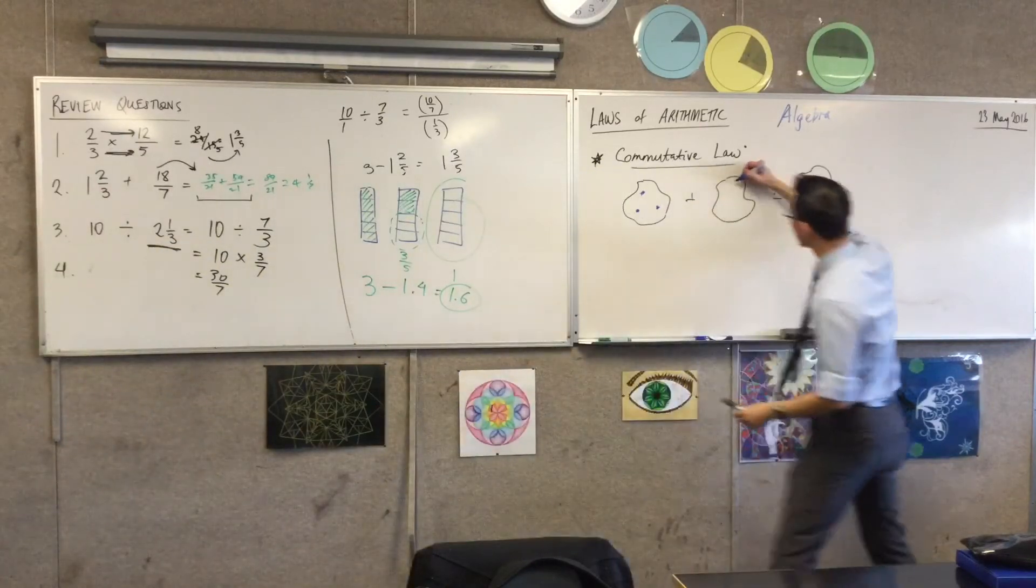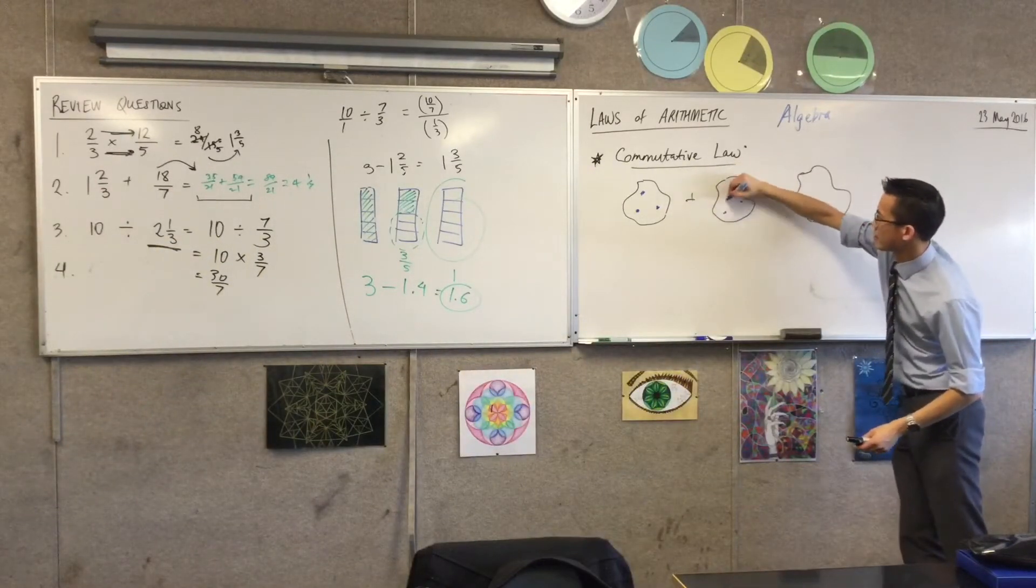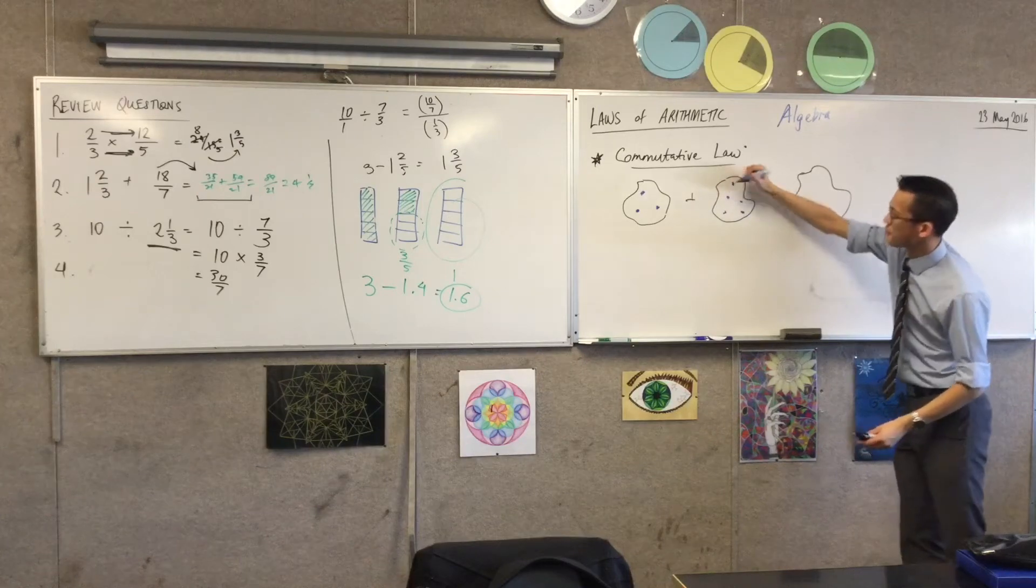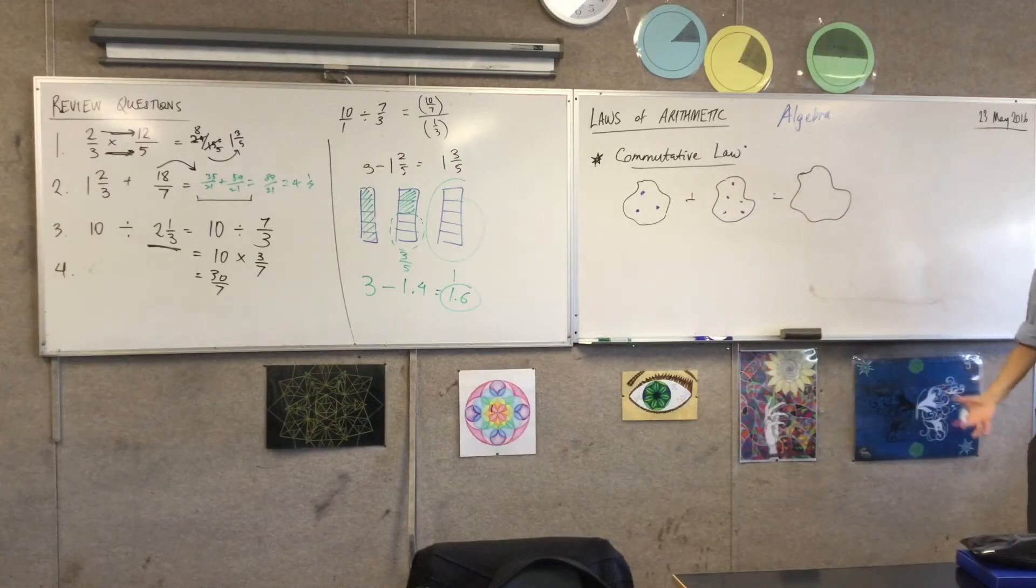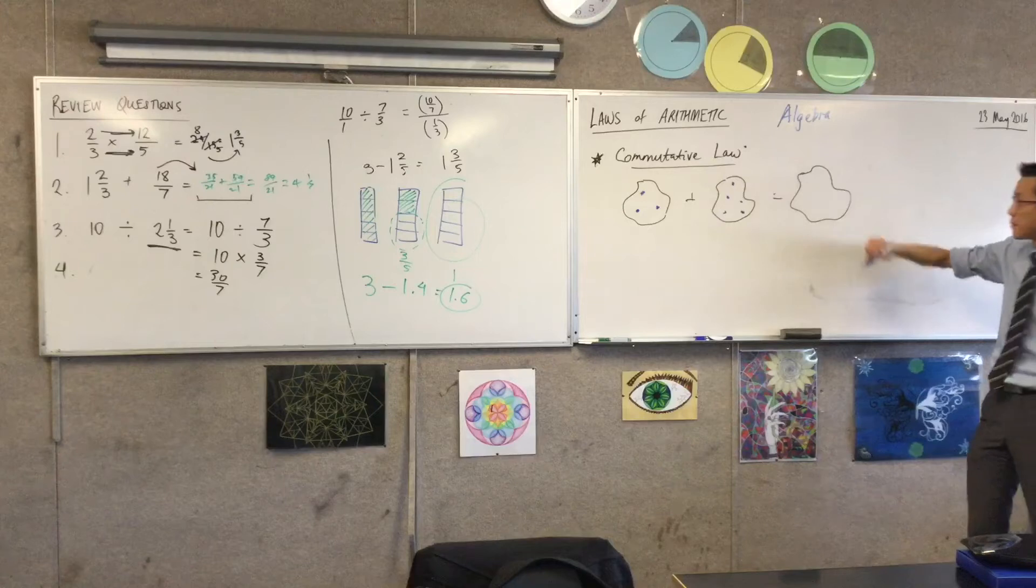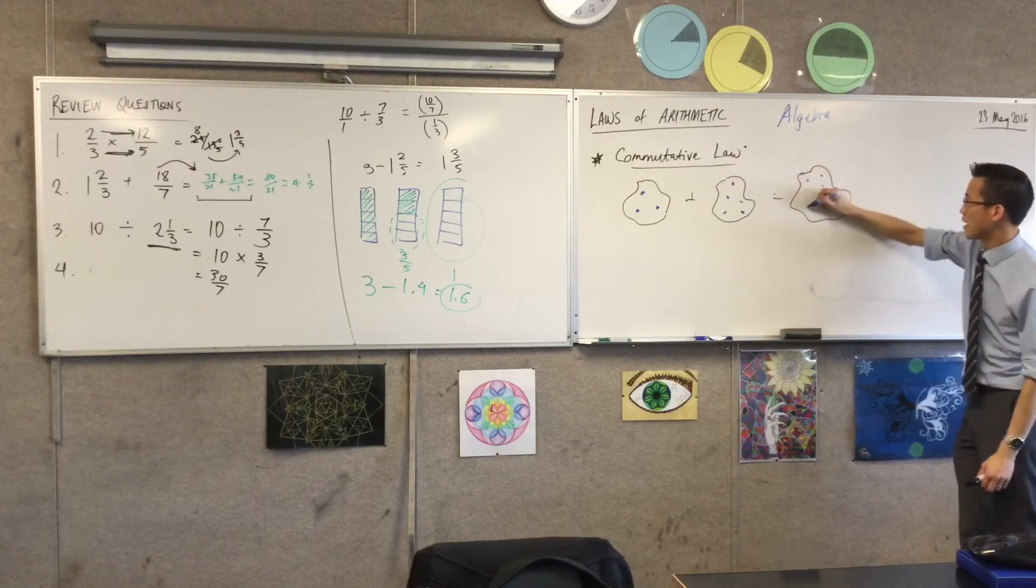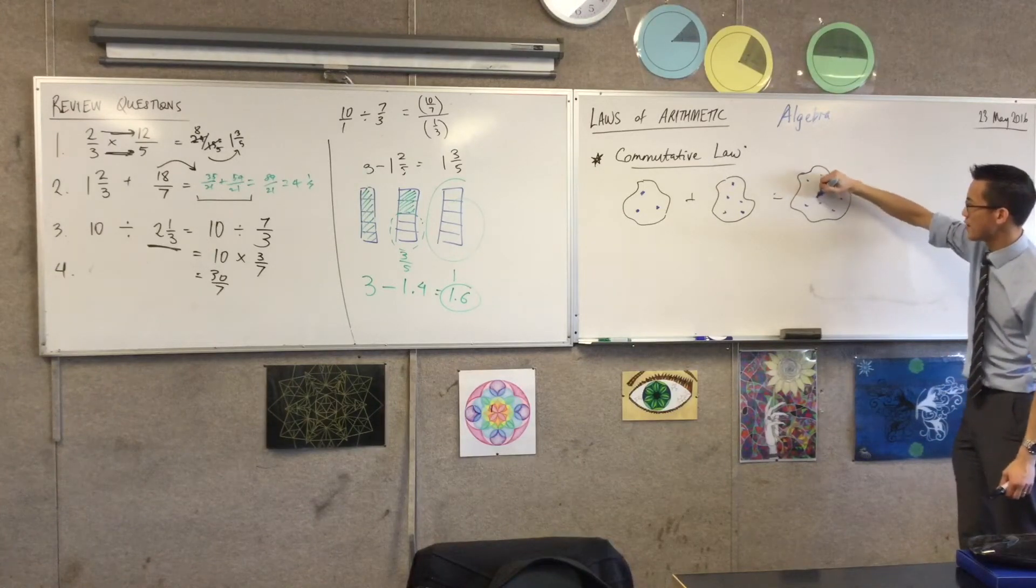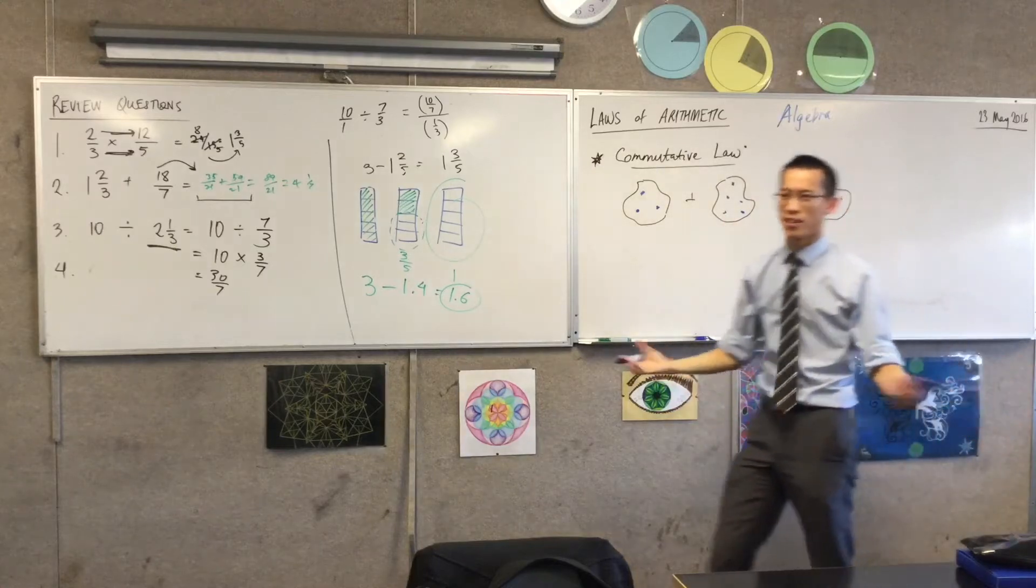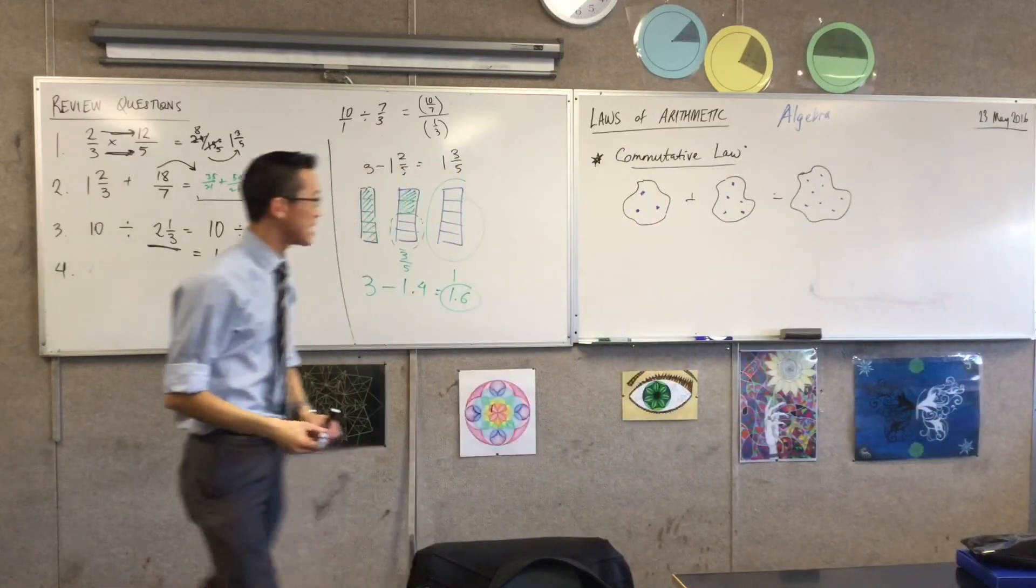If I said three plus five, we all know what three plus five is. I'm going to put them all in a big pile over here. One, two, three, four, five, six, seven, eight. Three plus five equals eight.